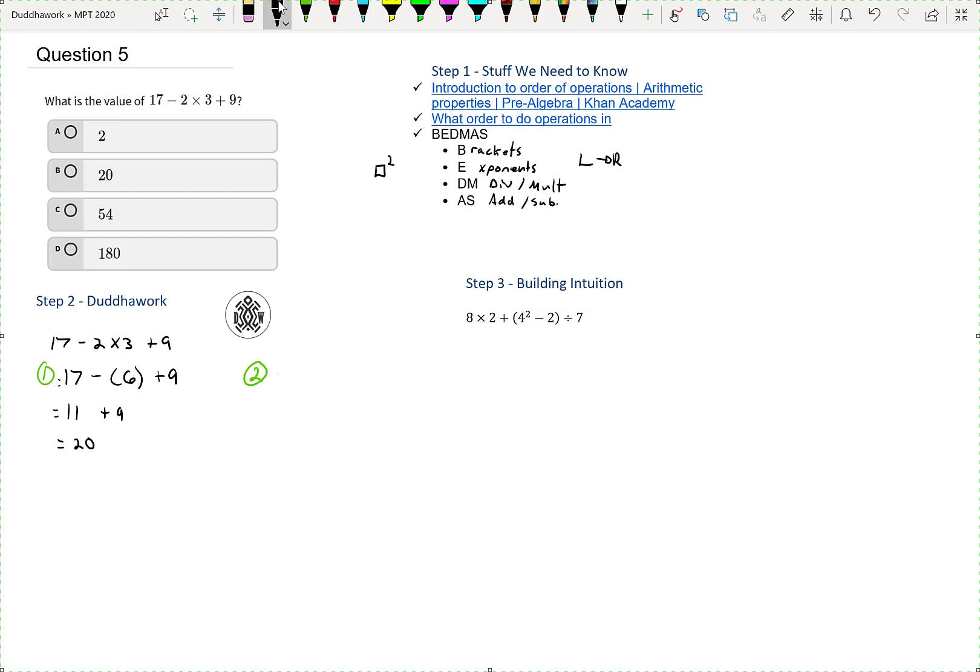So the second way we could have interpreted this is that really we have something like 17 plus negative 2 times 3 plus 9, right? Like that's the negative 2 times 3 that we could have done. So that would be 17 plus negative 6 plus 9. So now we have three additions with a negative number.